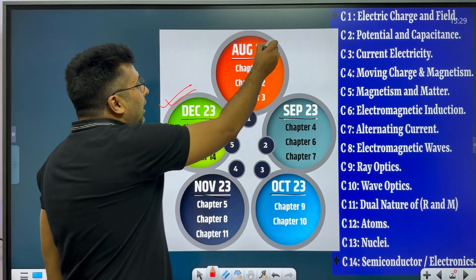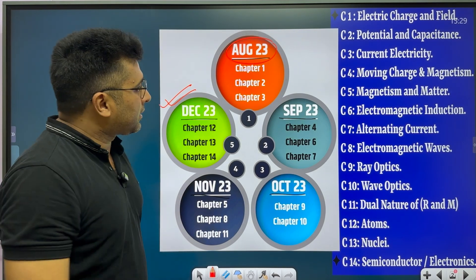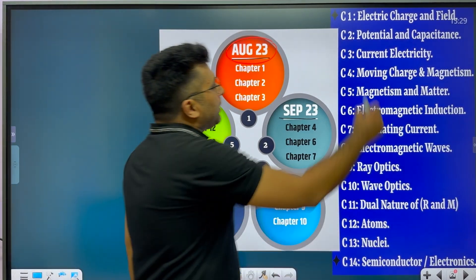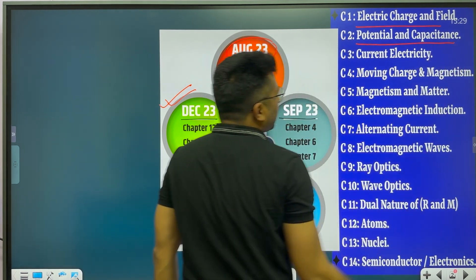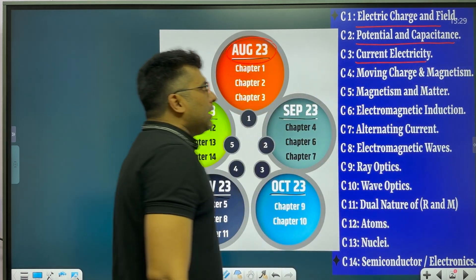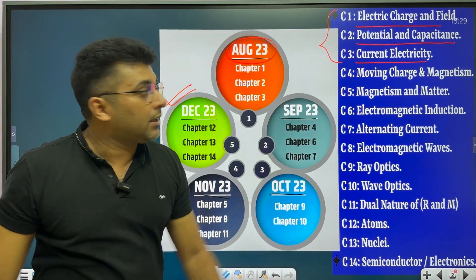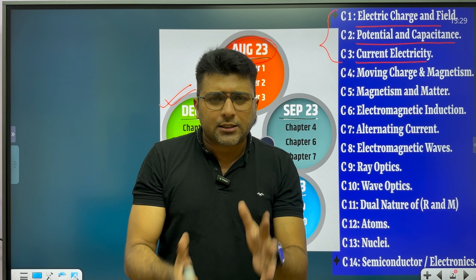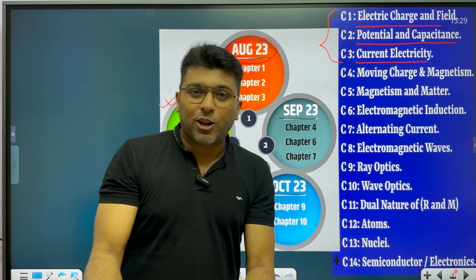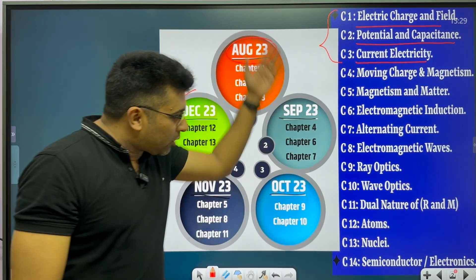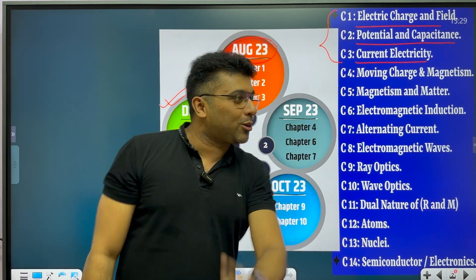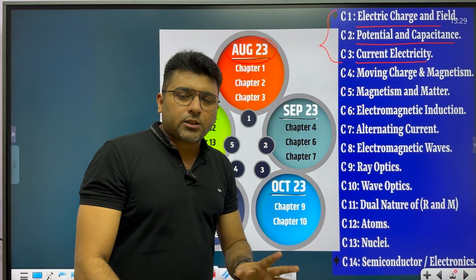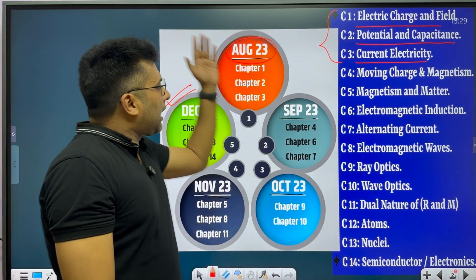So starting from August 2023, the chapters you need to do are: Chapter 1, Chapter 2, and Chapter 3. What are these chapters? Chapter 1 is Electric Charges and Fields, Chapter 2 is Electric Potential and Capacitance, and Chapter 3 is Current Electricity. These chapters are very important. The first target is that in August, you complete Chapter 1, Chapter 2, and Chapter 3. Trust me, with just one extra hour per day, this is very achievable.